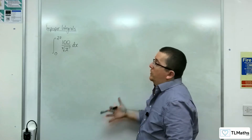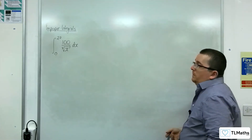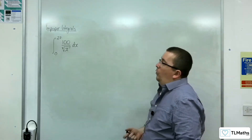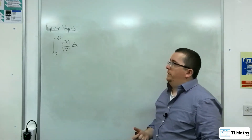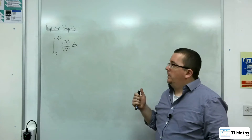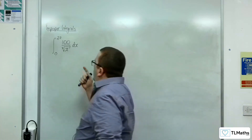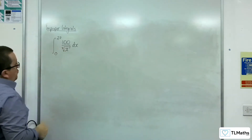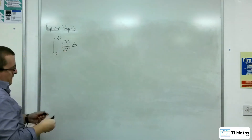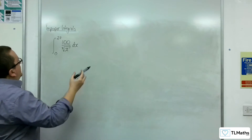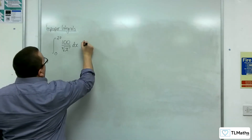In this video we're going to look at integrating between 0 and 27, 100 over the cube root of x. This is undefined when x is 0, and so this is an improper integral because of that.